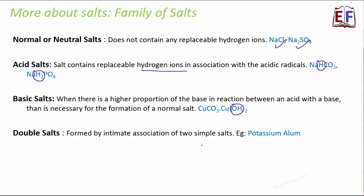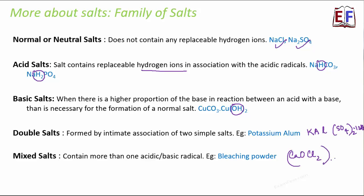Double salts are formed by association of two simple salts. When two simple salts combine together, they form double salt. For example, potassium alum. If you look at the formula of potassium alum, it is KALSO4 whole 2.12H2O. We also have something called mixed salt. They contain more than one acidic or basic radical. For example, bleaching powder. Bleaching powder is CaOCl2. These are just to tell you that even in salts, we have so many different categories. We will look at complex salt. Complex salts, they dissociate in water to give one simple ion and one complex ion.